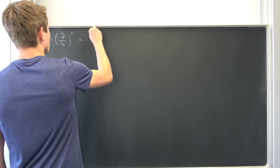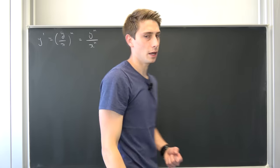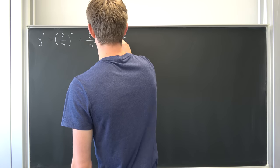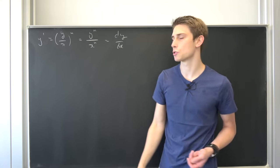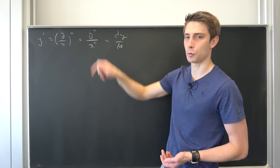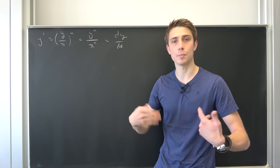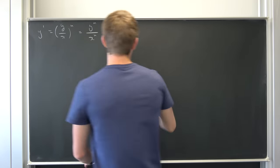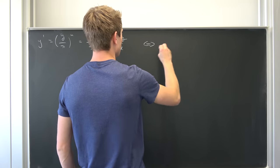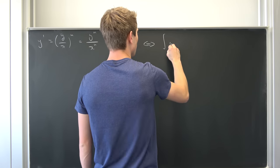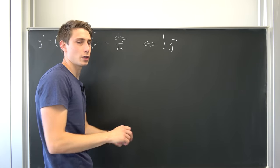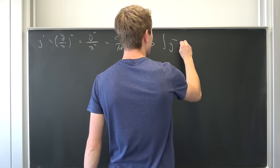So we end up with y to the nth power over x to the nth power. Don't forget y prime is nothing but dy/dx, and the easiest way to solve a differential equation like this is to divide both sides by y to the nth power (not equal to zero) and then integrate both sides with respect to x. We end up with the integral of y to the negative nth power dy.